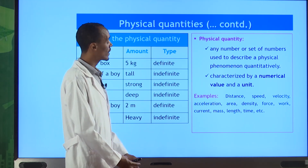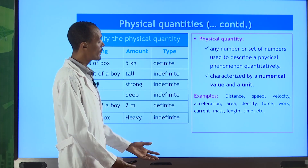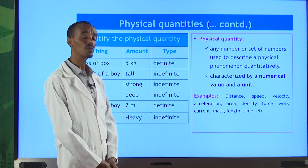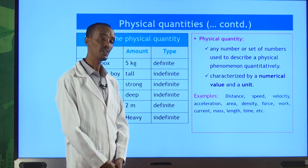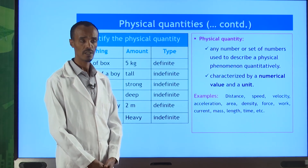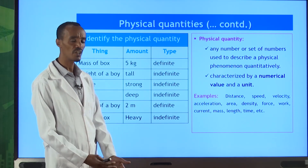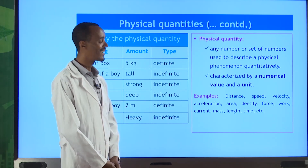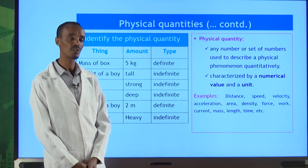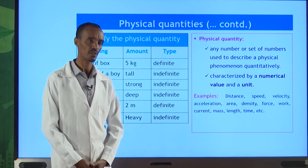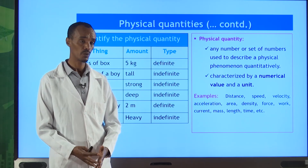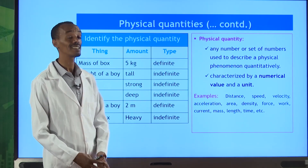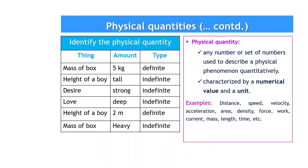Examples of physical quantities include distance, speed, velocity, displacement, energy, power, density, mass, length, and so on. You can mention many more. But we should know the meaning of physical quantity clearly.